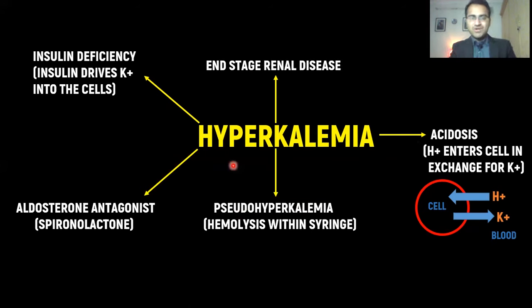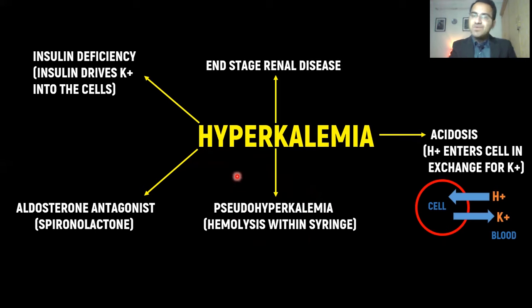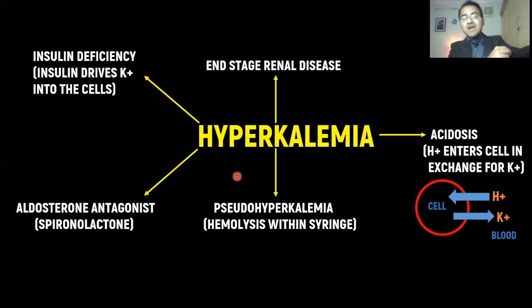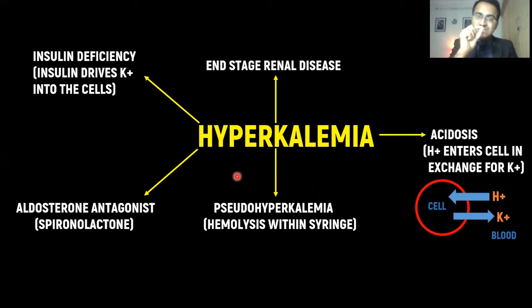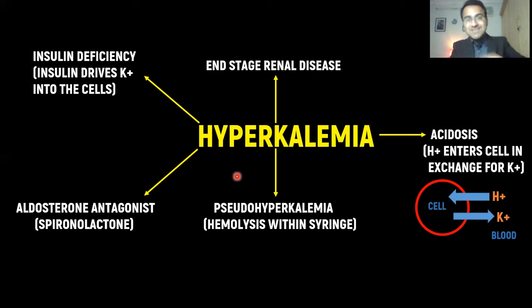Pseudohyperkalemia is a very important cause. In this condition, your body does not actually have excess potassium in the blood, but your labs show hyperkalemia. It happens due to wrong venipuncture technique — when blood is drawn too quickly, the RBCs, which are bags of potassium, rupture within the syringe. This hemolysis causes potassium levels in the sample to go up.